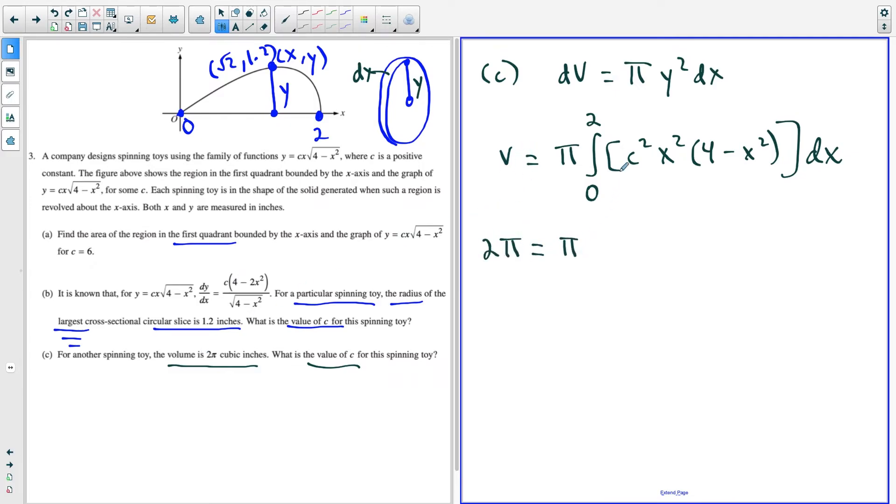And now I have pi times c squared, we could take it out because it's constant, and we have the integral from zero to two. And now we'll just distribute the x squared. So we'll have x squared times four is four x squared, minus x squared times x squared is x to the fourth. And now we just tack on the dx here.